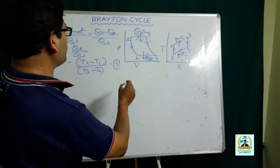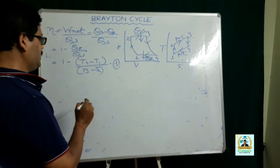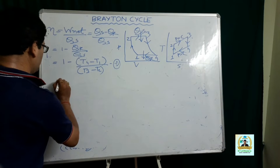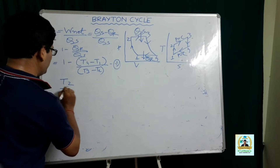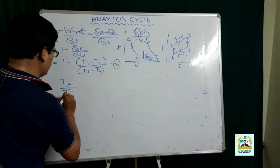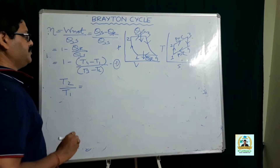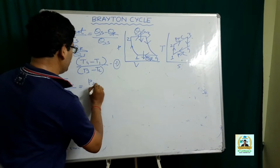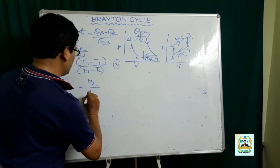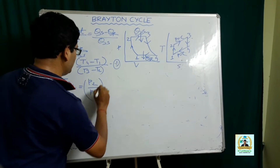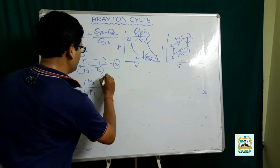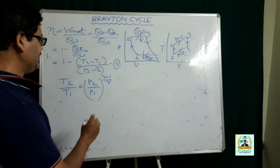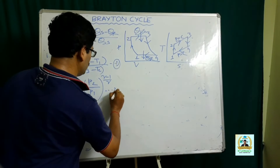For the isentropic process 1-2, T2/T1 = (P2/P1)^((γ−1)/γ). Let this be equation 2.